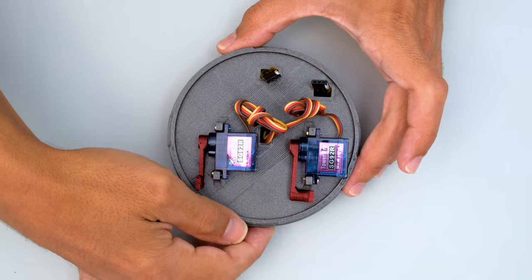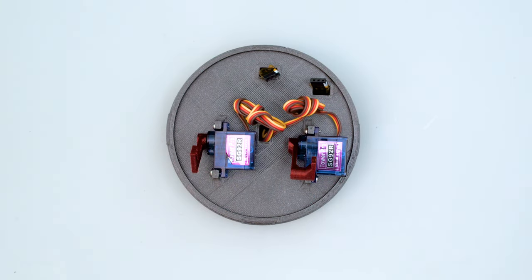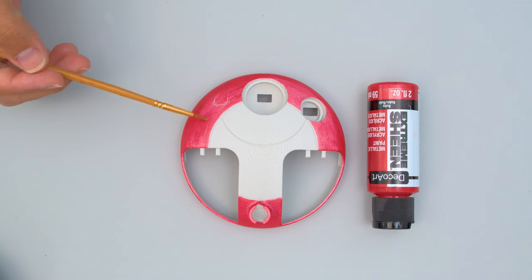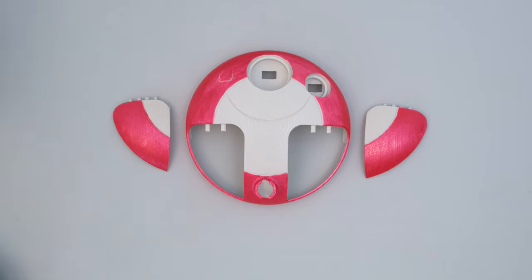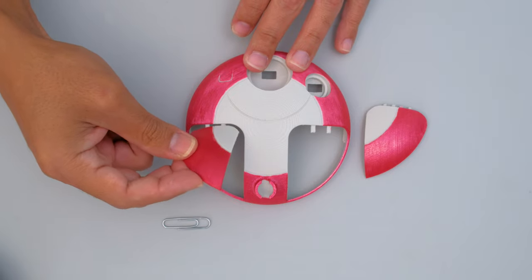The 3D printed servo horns are positioned to avoid clipping and moving in the wrong direction. We brushed on metallic paint for the red color on the main upper body and wings. Metal wire or a paper clip can be used as the pin to create the hinge for the two wings and tail.